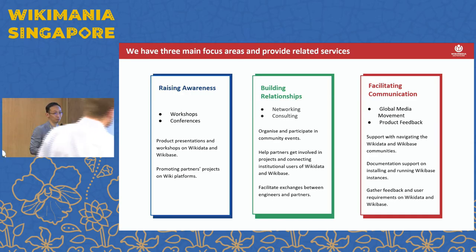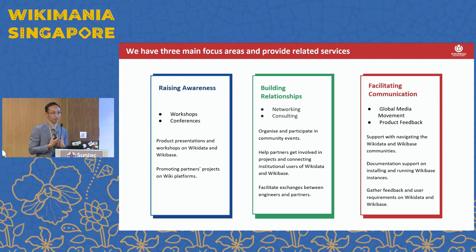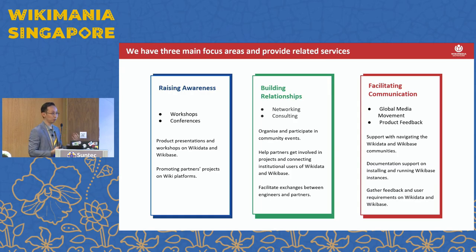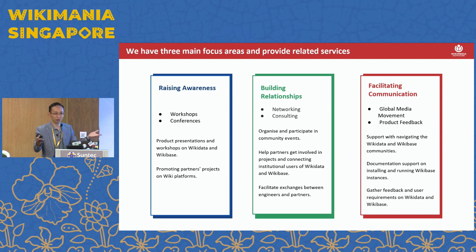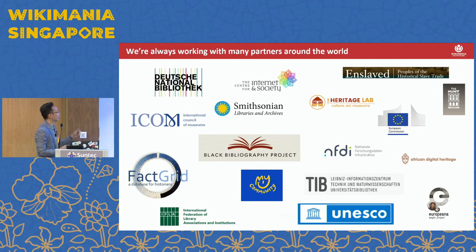We try to do a lot of things and we're a very small team, but we are not doing it alone — we are doing it together with everyone in the community. Some of the partners we have been working with include the German National Library, eComps, Smithsonian, the community from Singapore, and many other partner organizations. We work on documentation, gather feedback and user requirements, and keep each other connected so we know everyone in the ecosystem who is interested.